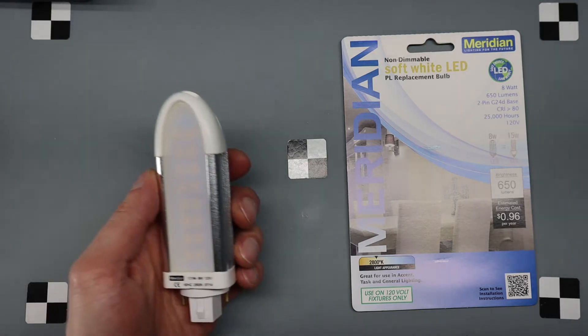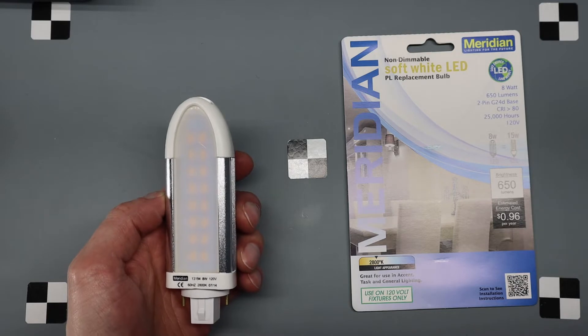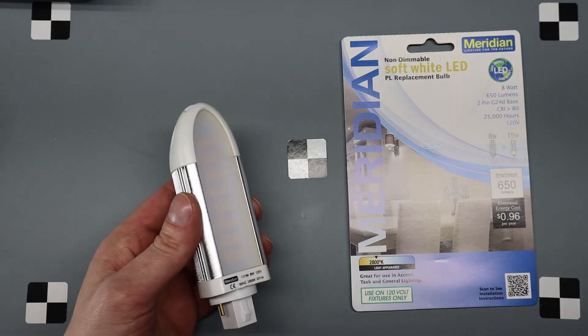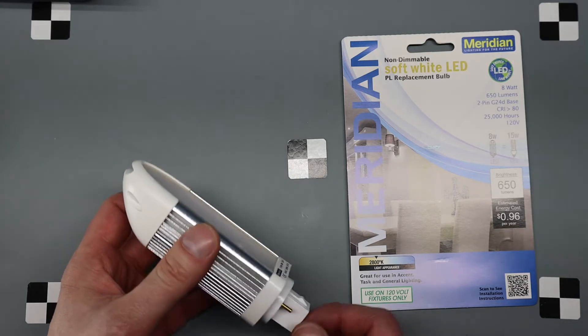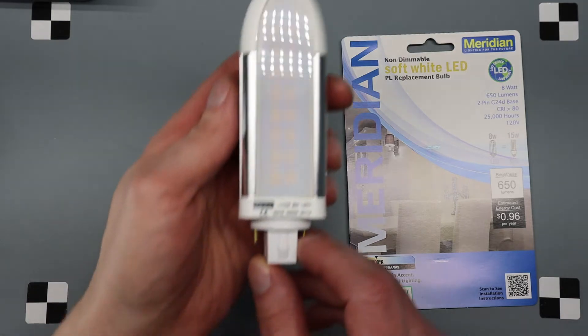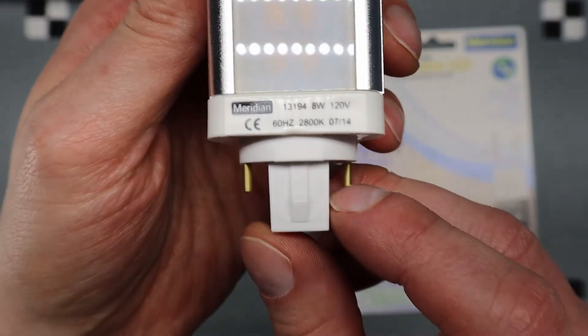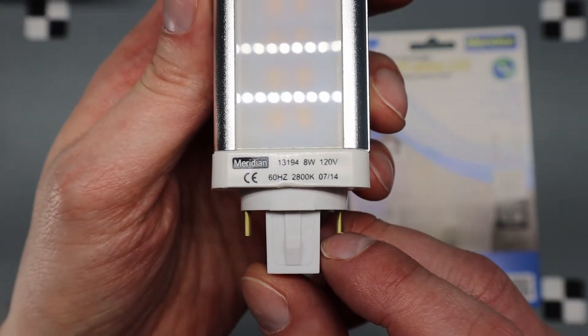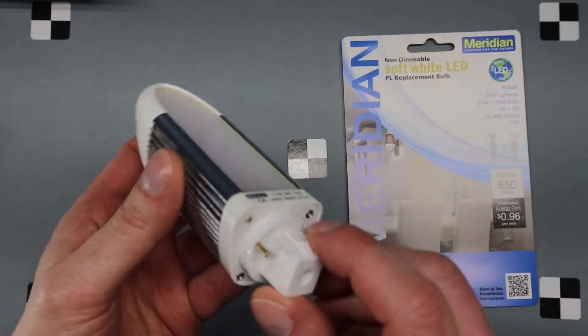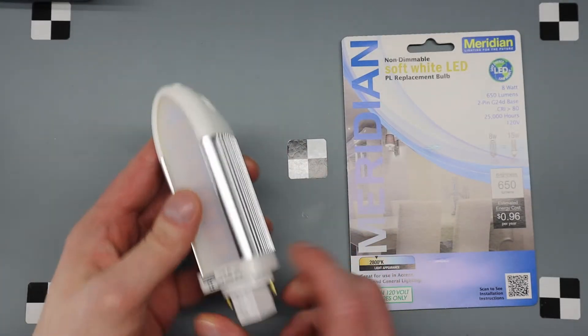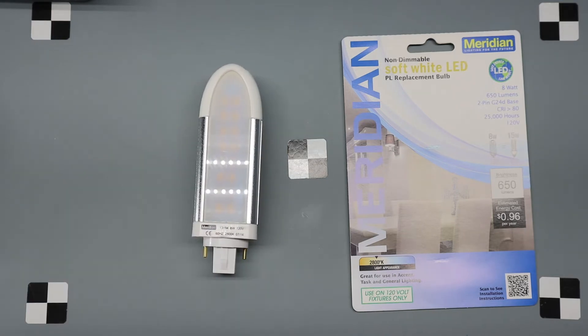All right, today I'm going to look at a Meridian brand 8 watt 650 lumen light fixture. As you can see, I think this has some kind of proprietary socket or something. I don't even have a lamp for it, was just in a box, so I figured I'd take a look at it.